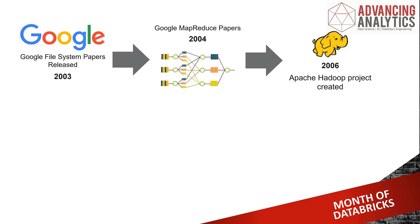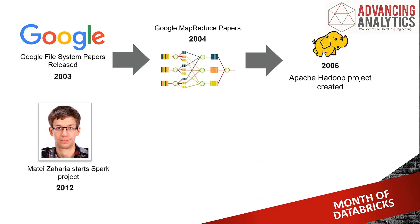And that's where this guy comes in. Matei Zaharia, along with his colleagues at UC Berkeley, went ahead and created a thing called the Spark project. That is taking the idea of MapReduce and Hadoop and this parallel processing, but doing it in memory. So you're circumventing a lot of the I/O, the disk read/write, and it's going to go a lot faster. Matei and colleagues then donated it to the Apache Foundation, and that became the thing we now know as Apache Spark.